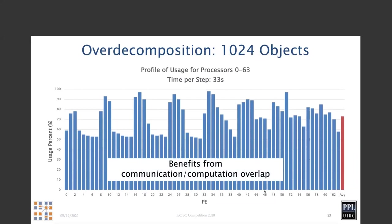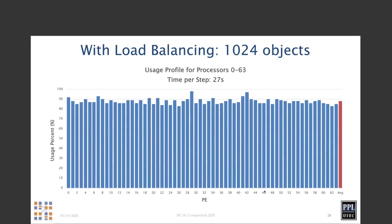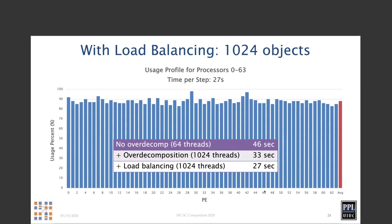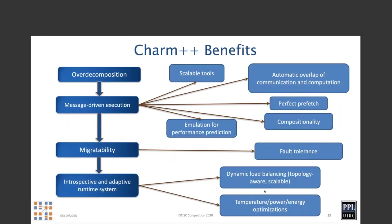As soon as we add virtualization — we can think of each object as a virtual processor — when you express the program in Charm++ with a thousand objects, performance already improves even without load balancing, because of randomization and some communication-computation overlap. Then after that, if you apply load balancing, performance improves significantly, going from 46 seconds to 27 seconds for that benchmark. There are multiple benefits: load balancing, fault tolerance, and energy optimizations.